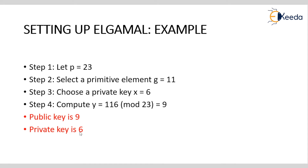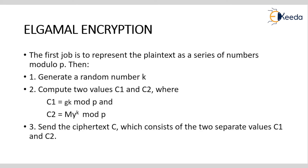The first step in encryption is to represent the plaintext as a series of numbers modulo P, then generate a random number key K. In ElGamal encryption, the ciphertext is a pair of two entities C1 and C2. To compute C1 and C2, we use: C1 = G to the power of K mod P, and C2 = M times Y to the power of K mod P. The ciphertext sent consists of both C1 and C2.